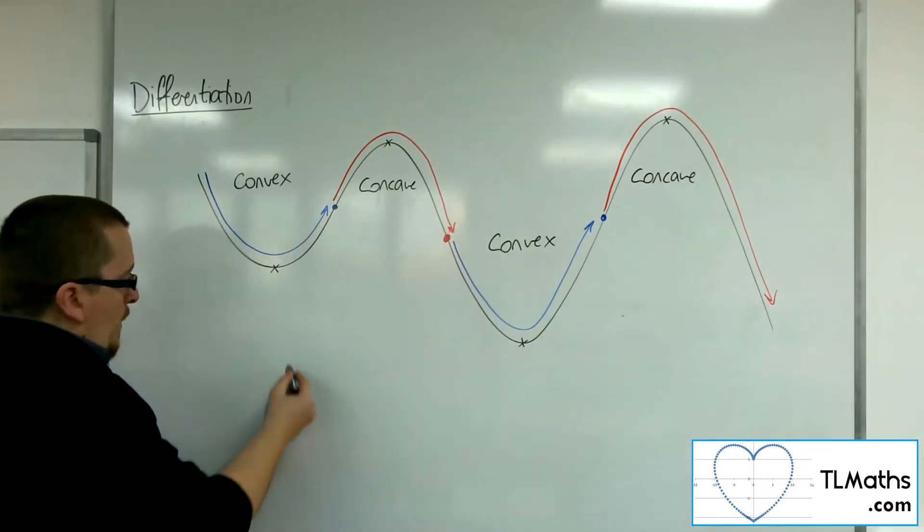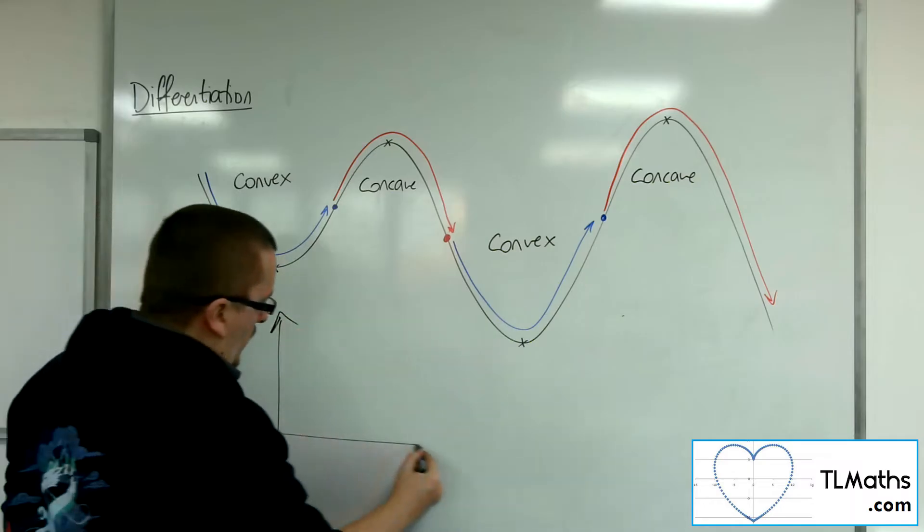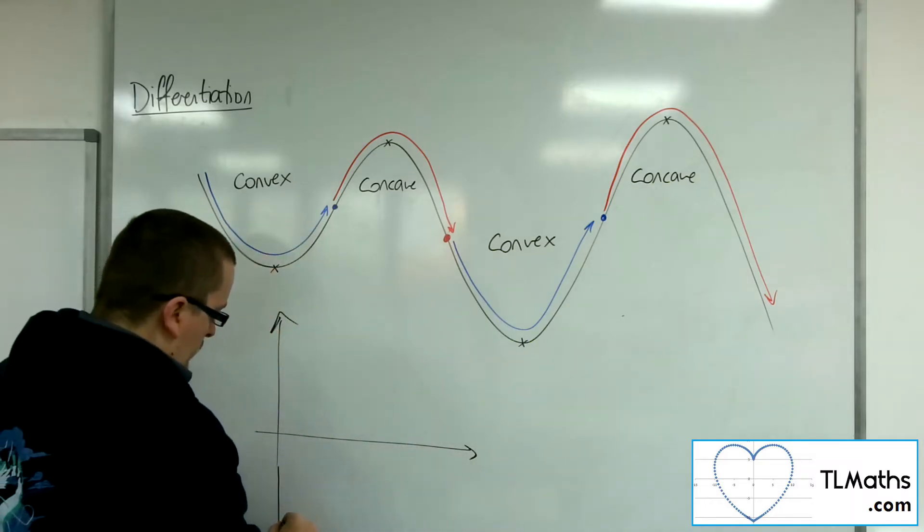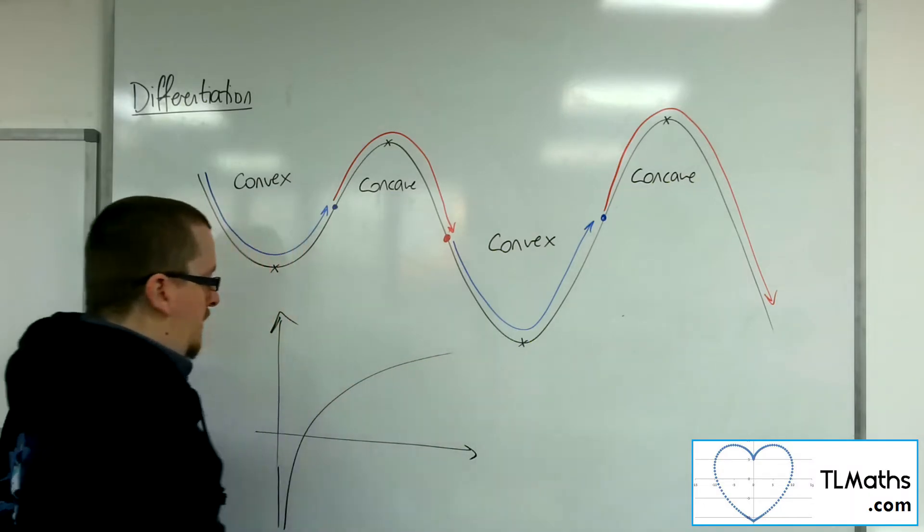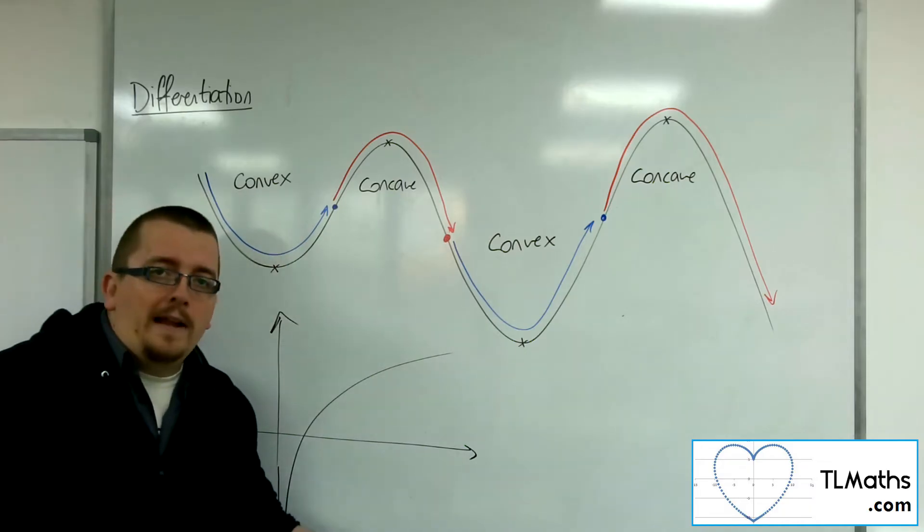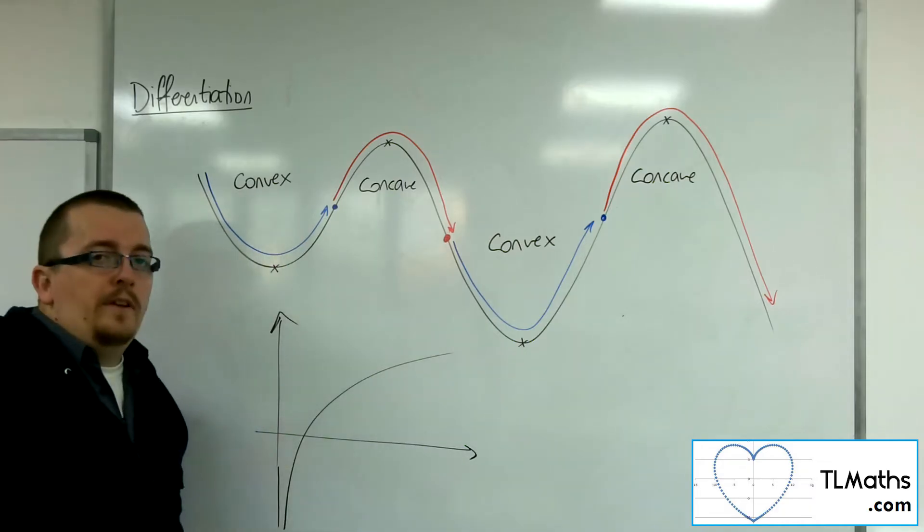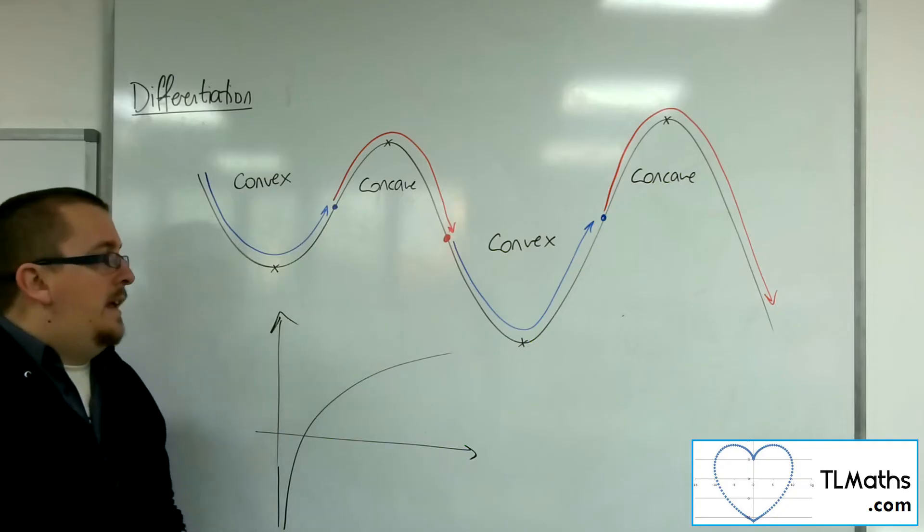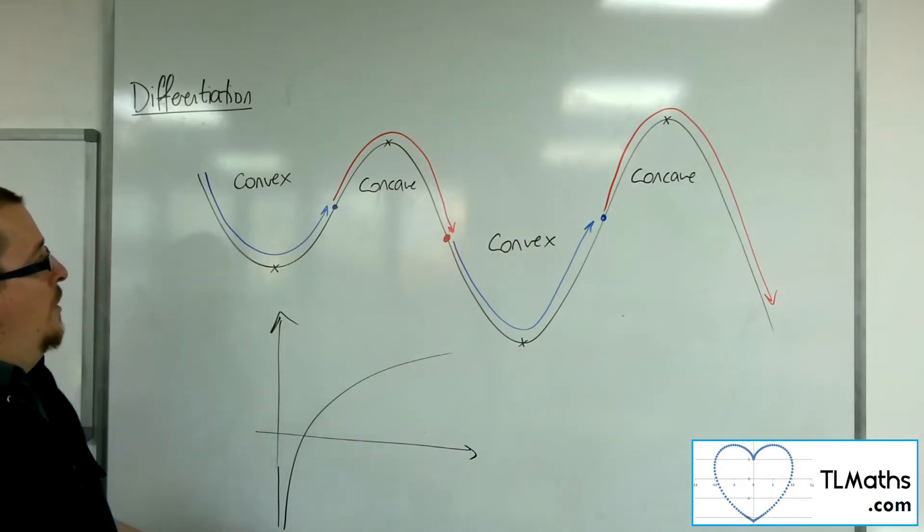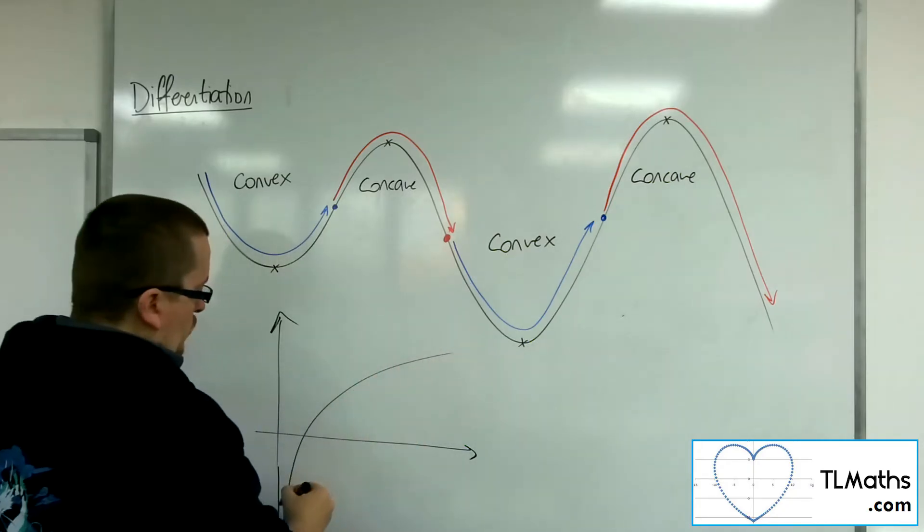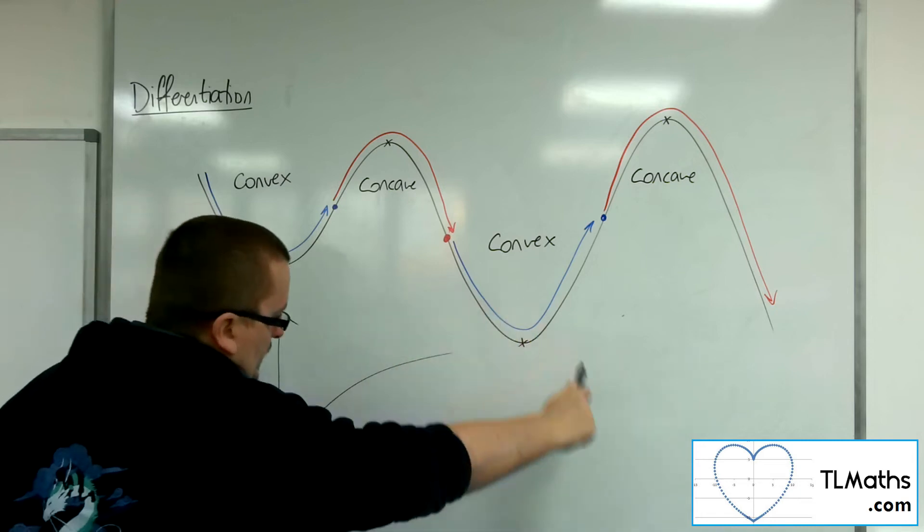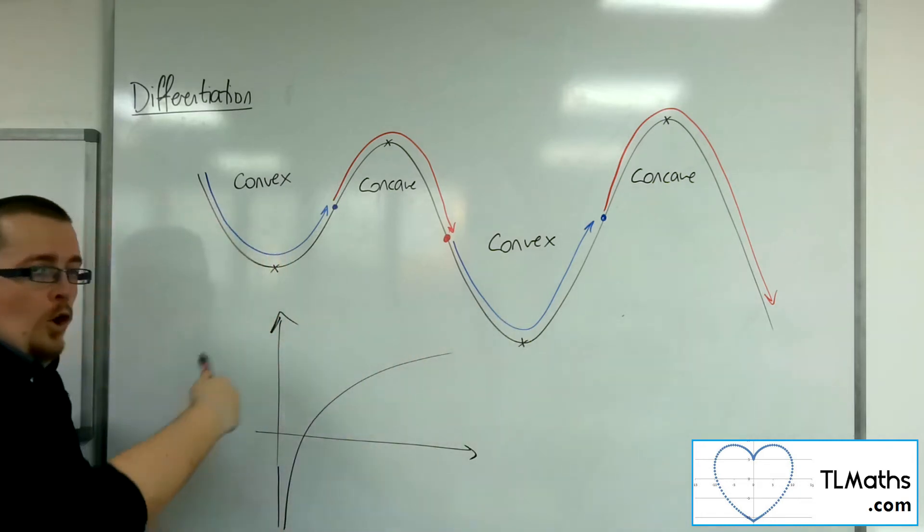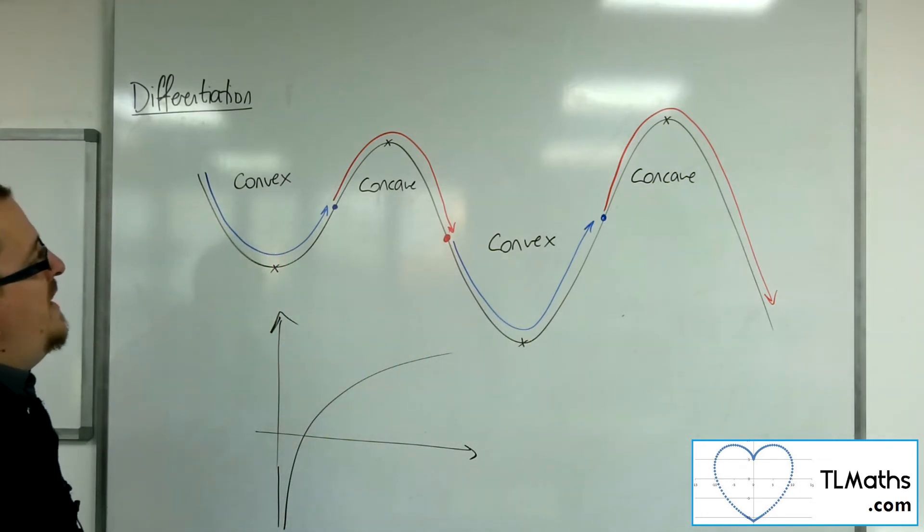So if, for example, you had another curve like y equals log x, then log x looks like that. So for all values of x that the curve exists for, it is concave. Because you're going around this, effectively, kind of like this clockwise motion.